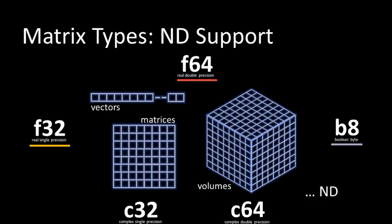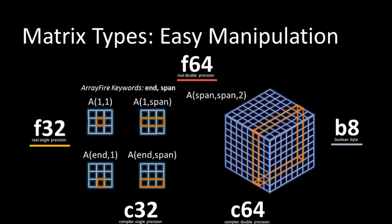ArrayFire is designed to support all sorts of dimensionality of data. Not only does it support vectors, but also 2D matrices, 3D volumes, and so forth. We have many customers using 4D and up as well. You can create arrays in any dimension and index into them and perform computations across them. It's easy to manipulate arrays with standard subscripting notation — you can pull out entire spans, individual elements, or patterns of indexing across the data in 2D, 3D, or N dimensions.